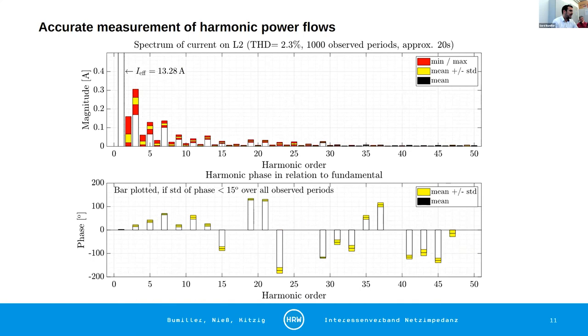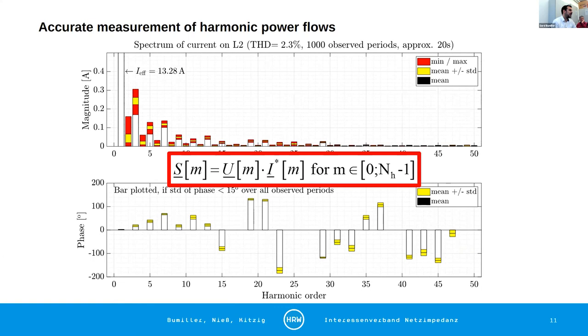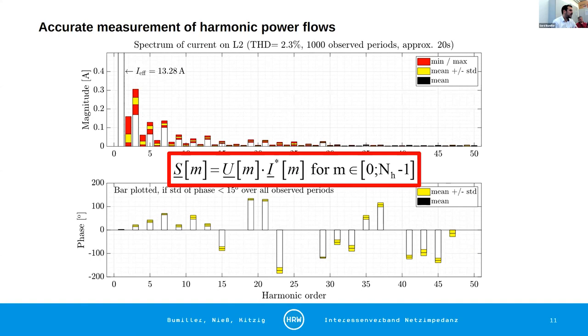We can do this also with current measurement. Now it becomes more important because we can now determine power flows on harmonics. So you should be familiar with this formula, with this equation. And we can now perform for each harmonic M, so M is our harmonic order, we can perform the apparent power, the real power, and the reactive power that are flowing on these harmonics. That's from me. Thank you very much. And if you have any questions, we are now open to listen to them.